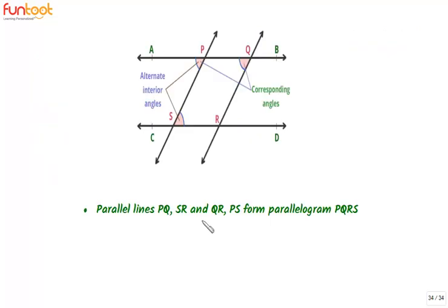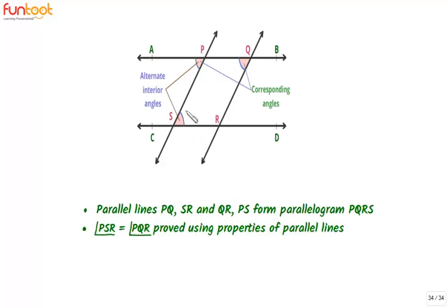Let's summarize what we have learned from this proof. Two pairs of parallel lines—that means PQ and SR, and QR and PS—form a parallelogram PQRS. We have proved in this proof that angle PSR is equal to angle PQR using the properties of parallel lines.